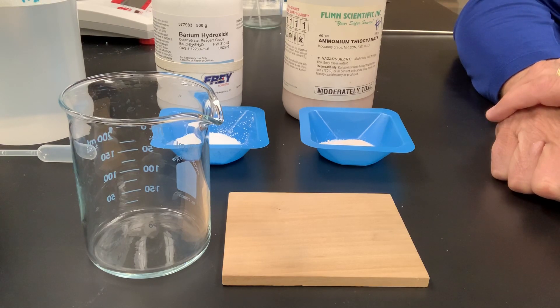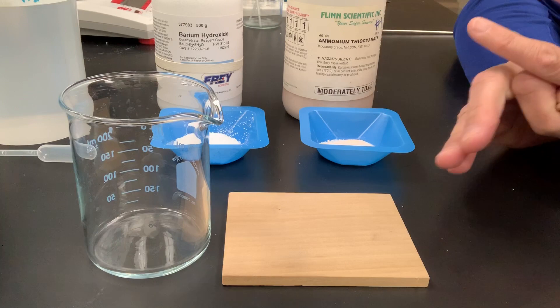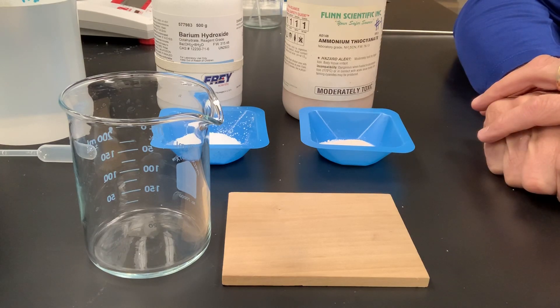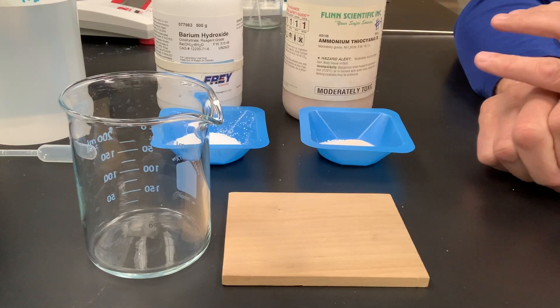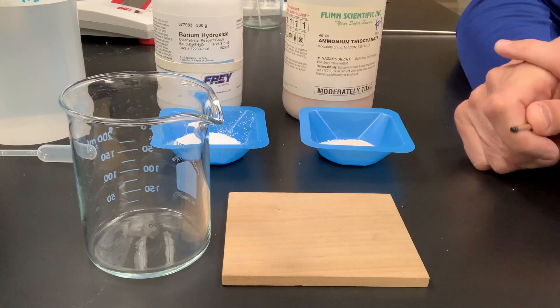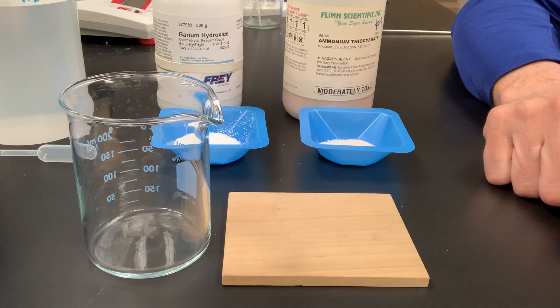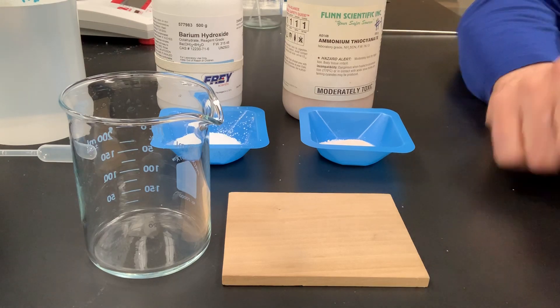One of the things I enjoy most about science are discrepant events. A discrepant event is an unexpected outcome to an experiment or to a demonstration. And I think what I'm about to show you today is a good example of a discrepant event.